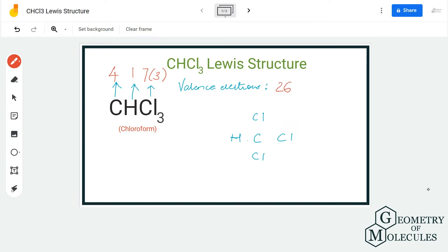of 26 valence electrons for CHCl3. Generally, in these molecules, hydrogen atoms always take positions on the outside and do not take the central position. Since carbon is less electronegative than chlorine atoms,